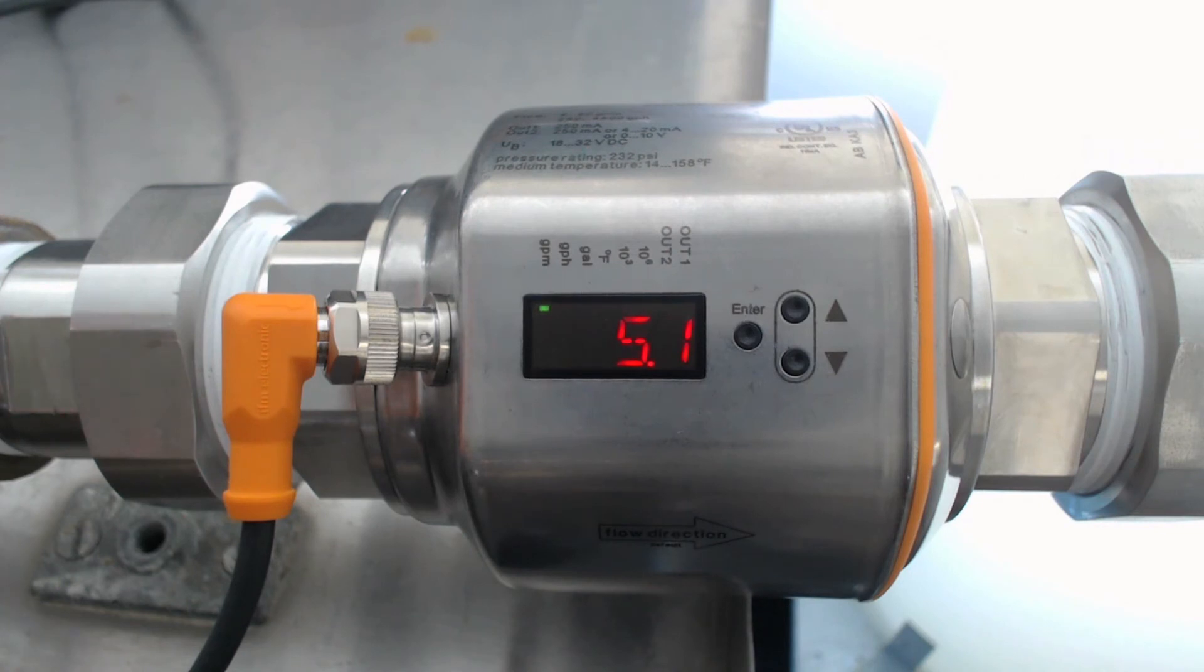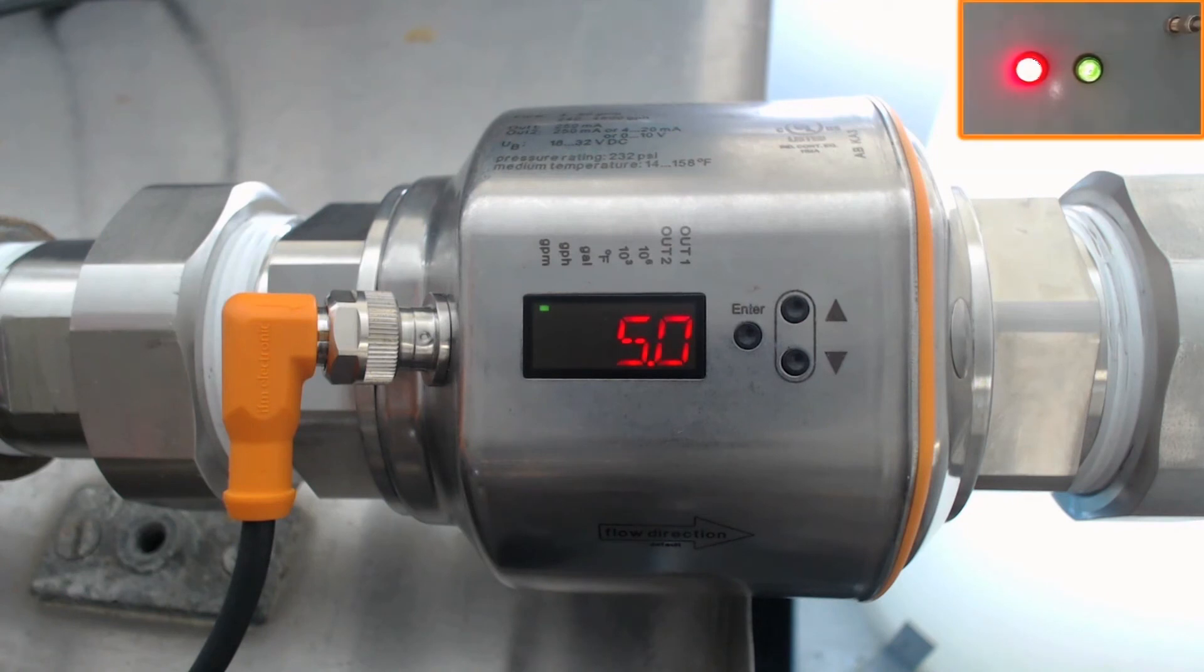To double check that the flow is receiving a pulse signal, the LED indicator, as it appears in the upper right corner of this video, confirms that the sensor is properly set up to give a continuous pulsed output of the flow.